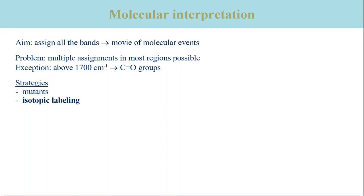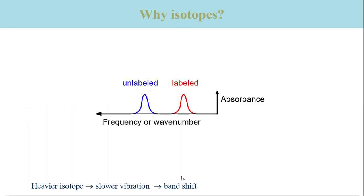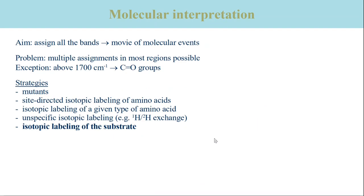The use of mutants is one strategy to assign bands in infrared spectra. Another approach is to use isotopes. Why is isotope labeling a powerful technique to assign bands in infrared spectra? As a mass increase lowers the vibrational frequency of an oscillator, isotope labeling shifts bands in infrared spectra. Here is shown the absorption band of the unlabeled species, and here the absorption band of the labeled species. When we compare the spectra with and without labeling, we can identify the contribution of the labeled group to the spectrum.